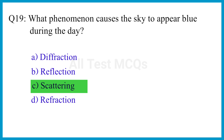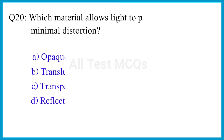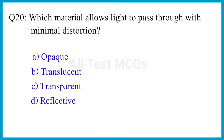Question number 20. Which material allows light to pass through with minimal distortion? The correct answer is option C. Transparent.